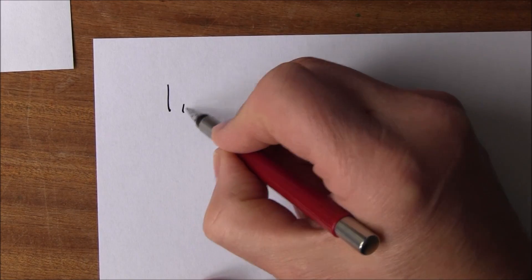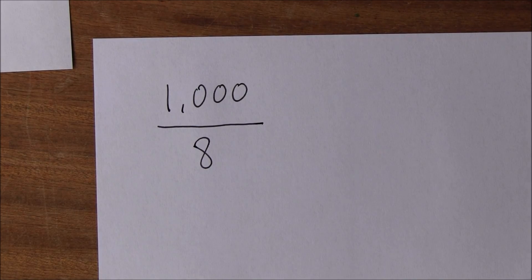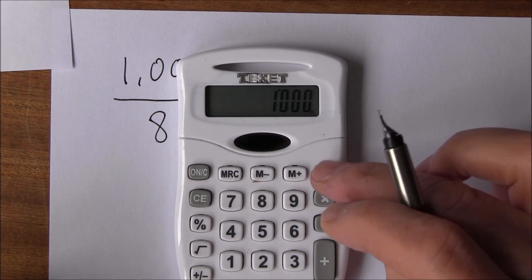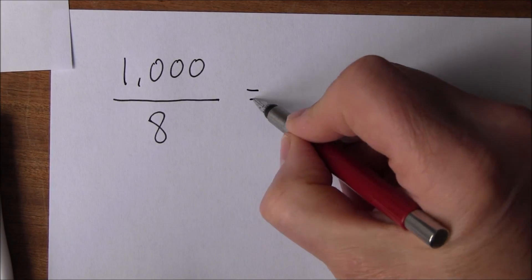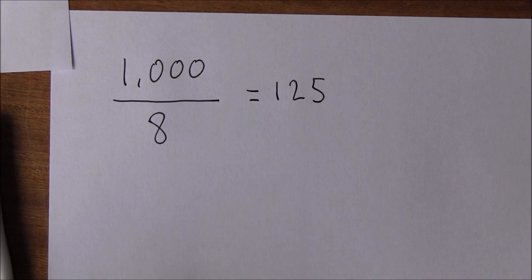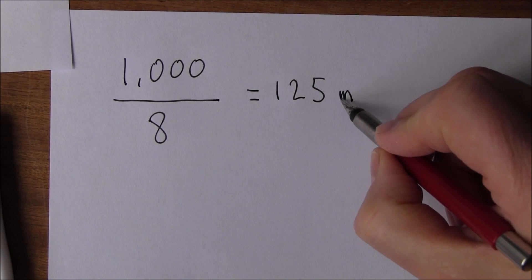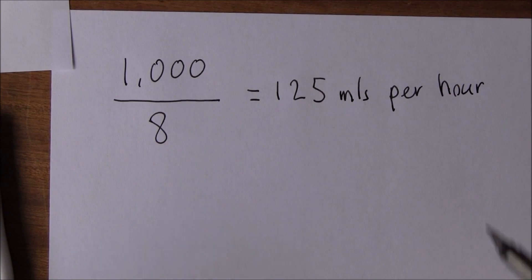1 litre is 1000 mils. So it's 1000 divided by 8, which equals 125 mils per hour.